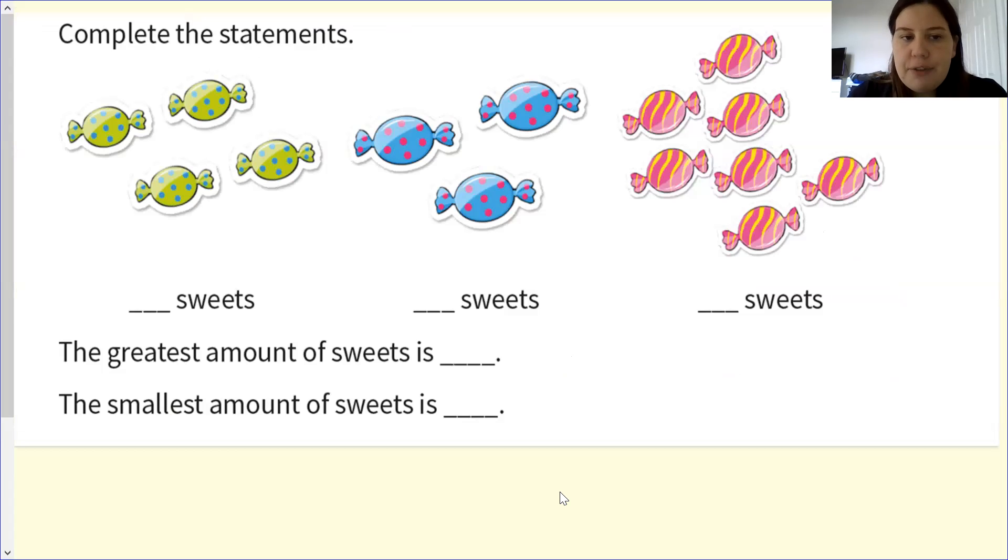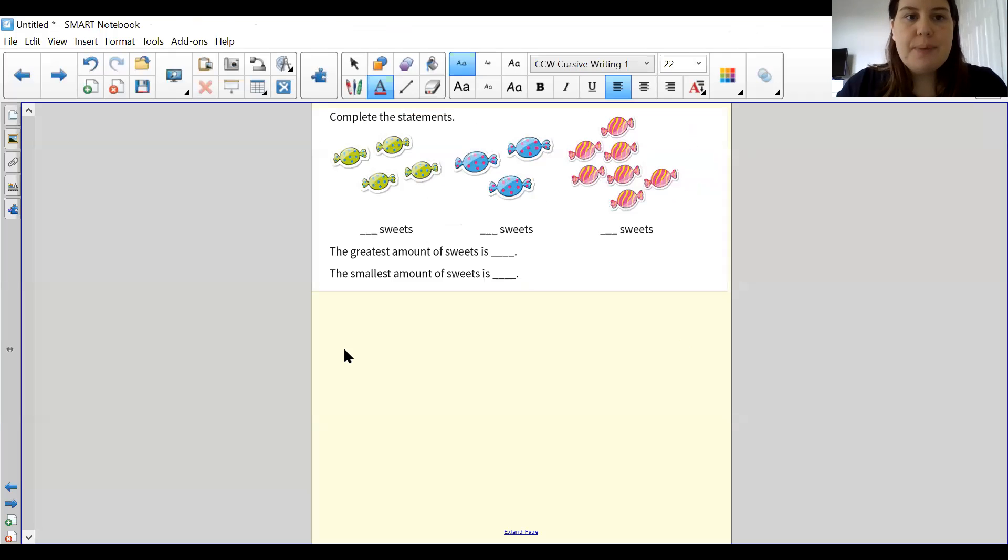So I've put a few questions in here for you to solve. I'm going to do the first one with you. And then we will let you do the next one by yourselves. So the greatest amount of sweets. The first thing I have to do, you can see there's gaps underneath. I have to fill out what each group is.